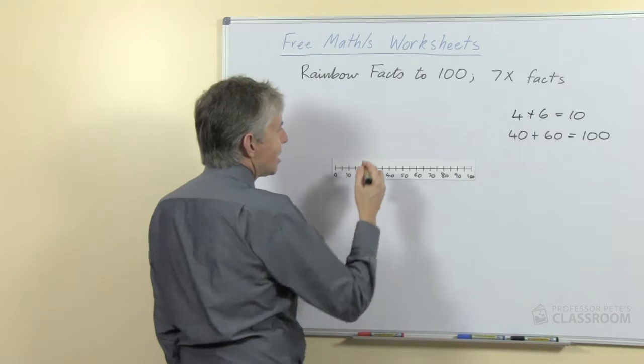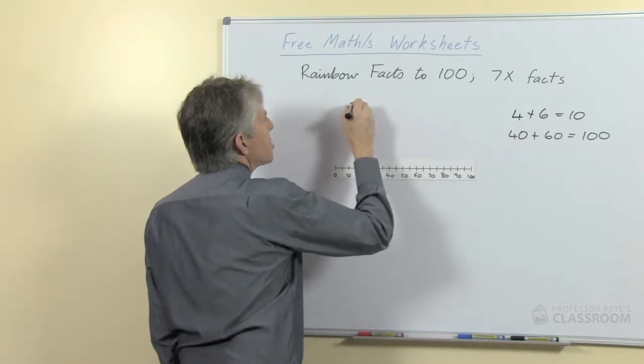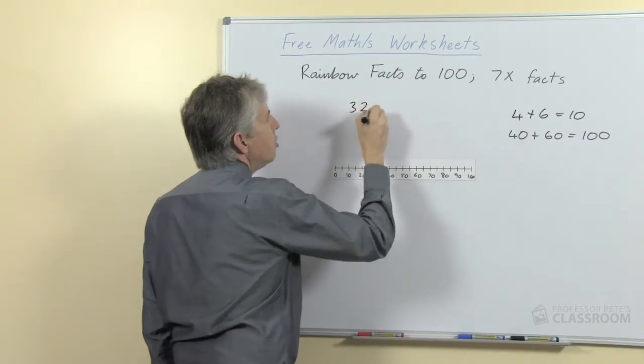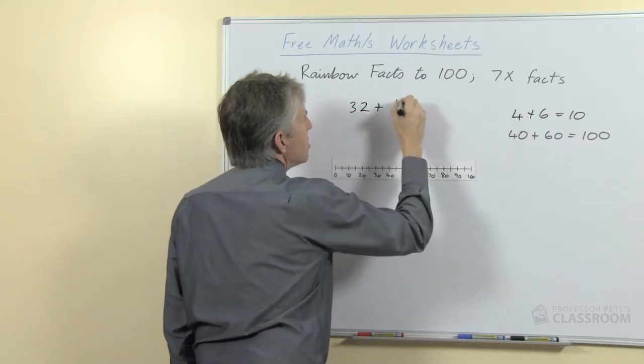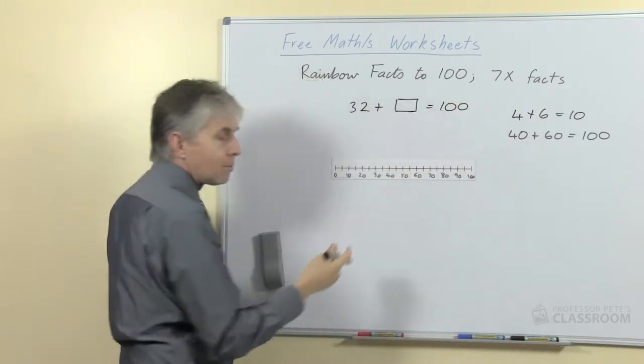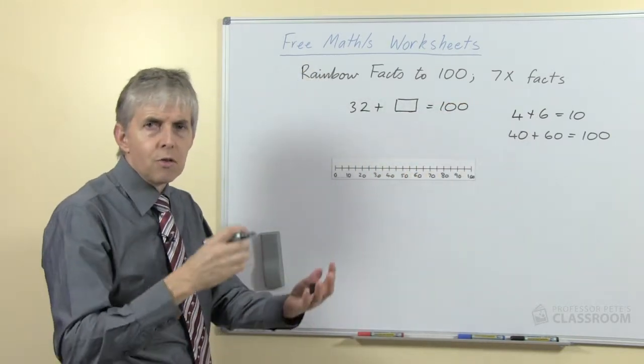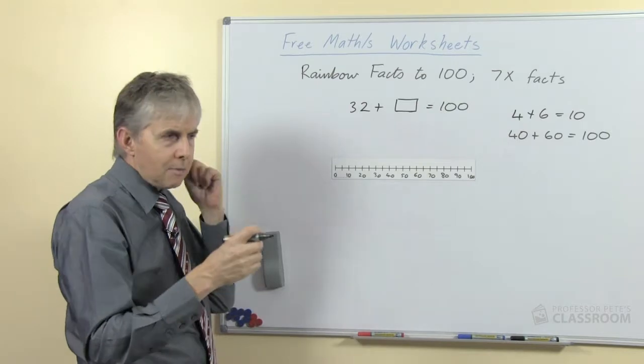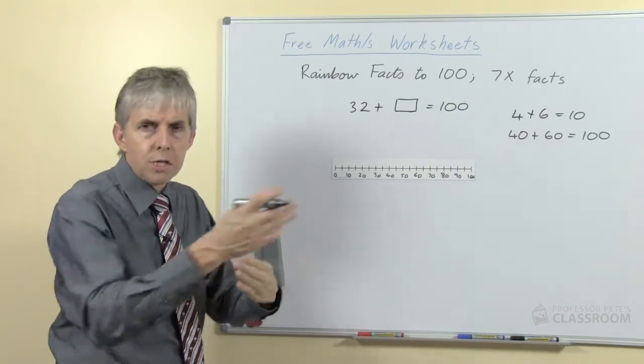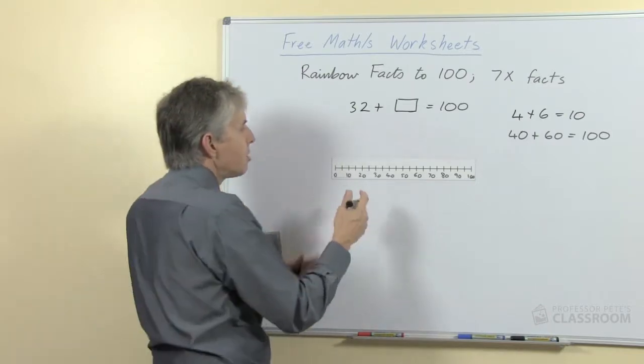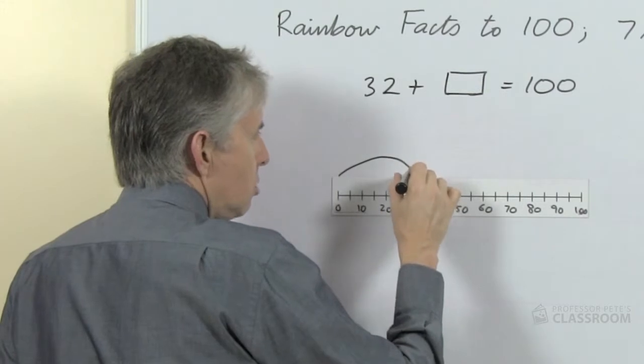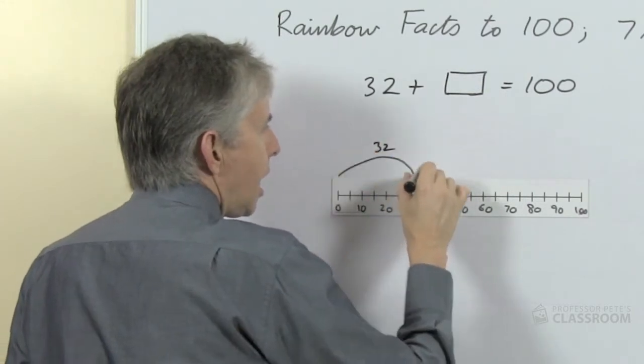So let's take another example. Supposing we've just done 30, let's make it 32 plus something equals 100. We could use the number line for this. Number lines are quite useful for helping students think about facts based on other facts, so if you already know 30 plus 70 equals 100, how can you do 32? So let's jump across to 32, there we go. How much more is there?